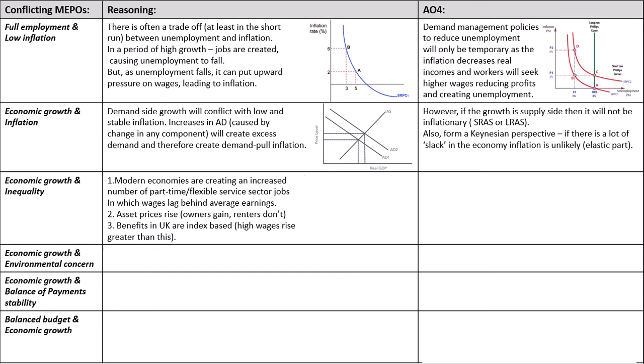A diagram you could draw is the Kuznets Curve — see if you can draw that now. The Kuznets Curve shows income per capita on the x-axis; as the economy grows, inequality worsens, but then after a while it gets better again. See if you can think about what some of the AO4 ideas are for why that happens.